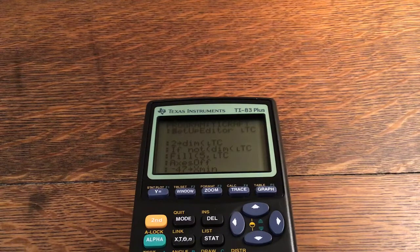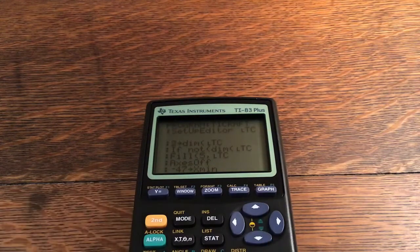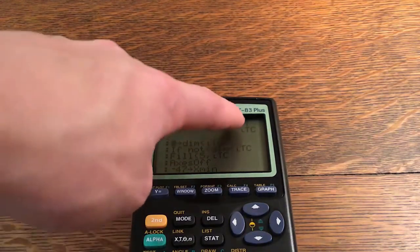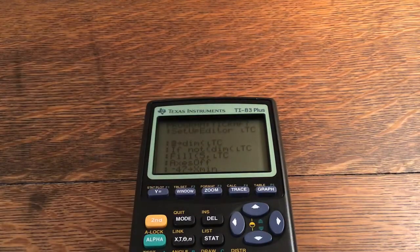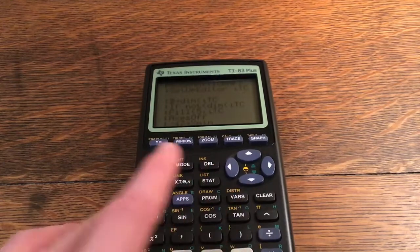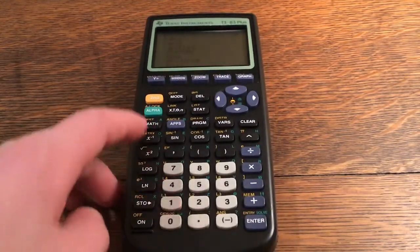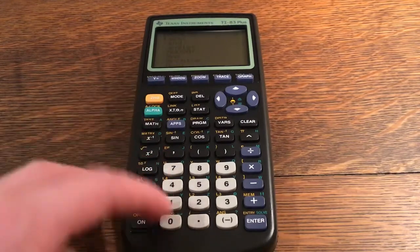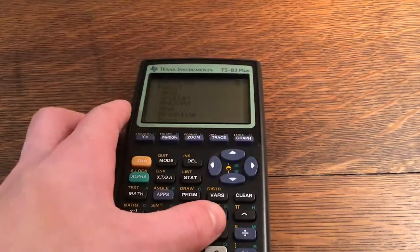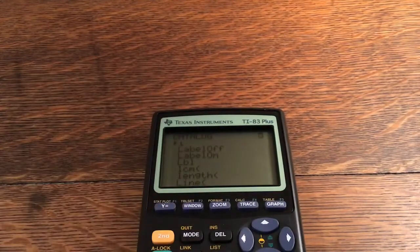Setup Editor for list TC. Remember to find that little L you use 2nd and 0 which takes you to the catalog. You click L which would be this parenthesis button right here. 2nd, 0 to take you to catalog because catalog is the second function.